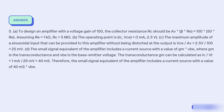Five, to design an amplifier with a voltage gain of 100, the collector resistance RC should be Av × β × re equal to 100 × 50 × re. Assuming re equal to 1kΩ, RC equals 5MΩ. The operating point is IC, VCE equal to 1mA, 2.5V. The maximum amplitude of a sinusoidal input that can be provided to this amplifier without distortion at the output is VCE / Av equal to 2.5V / 100 equal to 25mV.